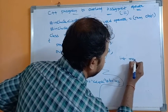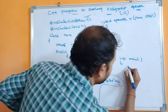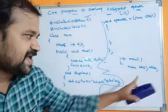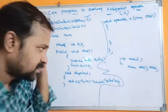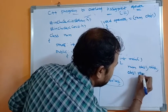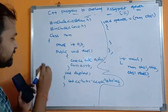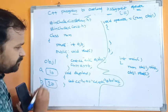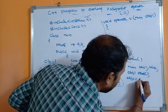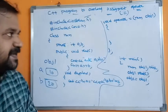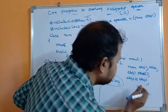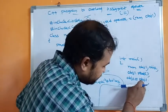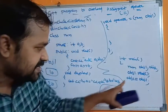Let us define the main function: int main. Let us create two objects, obj1 and obj2. Our target is to call the read method for the first object, so obj1.read(). Now the control goes to the read method. Next, obj2 = obj1. Whenever this statement is executed, this operator function will get executed, and obj1's information will be passed to the operator function's parameter.